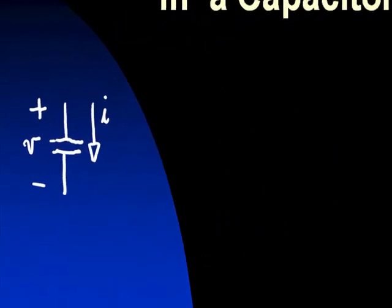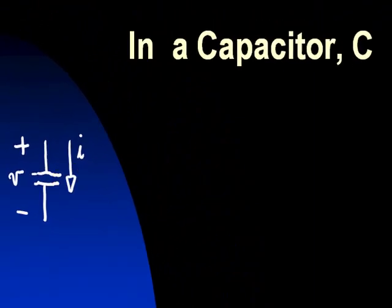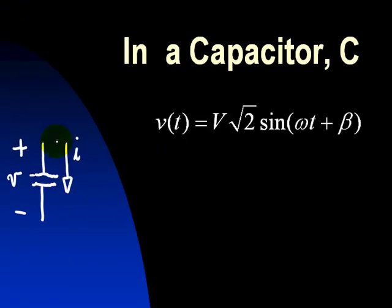In the capacitor, again, we're given the voltage. We want to compute what is the current, and we are told that that voltage is a sinusoidal function of time. That voltage has an RMS value of V, a frequency of omega radians per second, and a phase shift of beta radians.